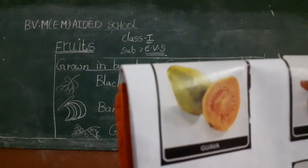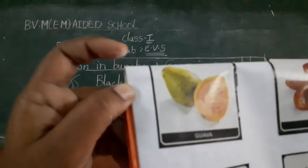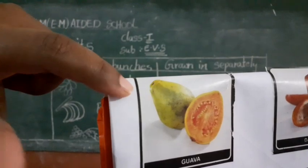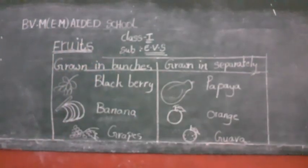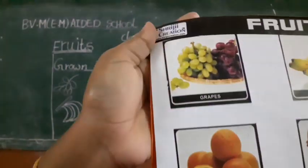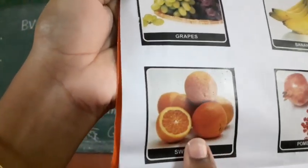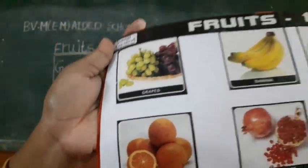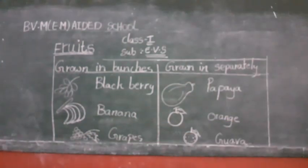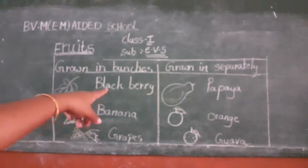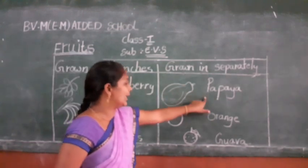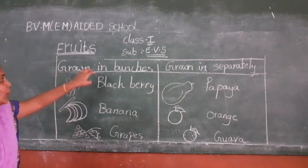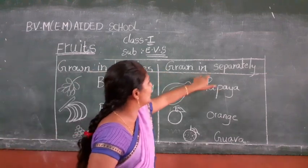Okay children. Once again I will show this picture. This is guava - guava grows separately. Next, which fruit is grown separately? Sweet lemon or orange - this fruit also grows separately. Next, which fruit is grown separately? Papaya. This is papaya - papaya is grown separately. So children, some fruits grow in bunches and some fruits grow separately.